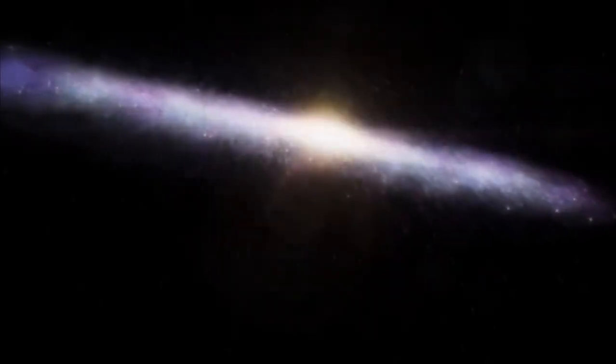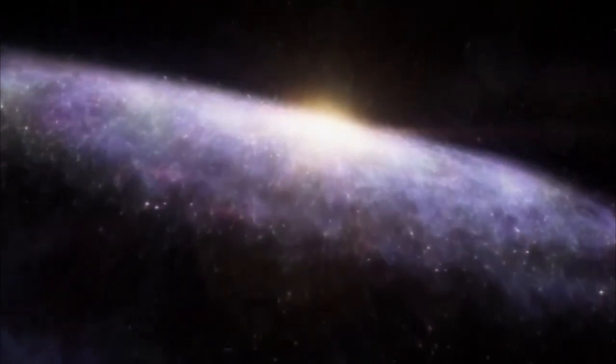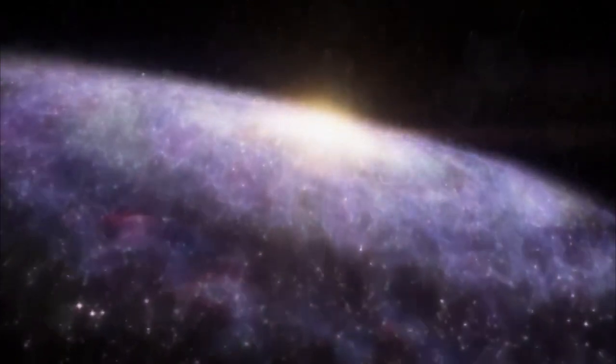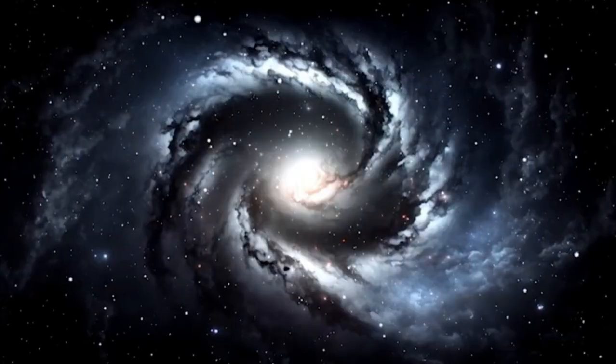Webb's image also shows faint tidal tails extending from the merger's outskirts, indicating the gravitational attraction between the two galaxies. Finally, reddish-orange streams and filaments represent organic material scattered across Arp 220.